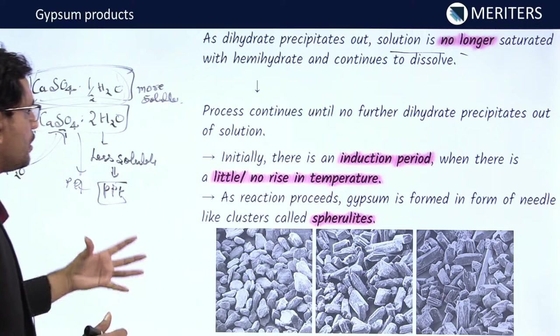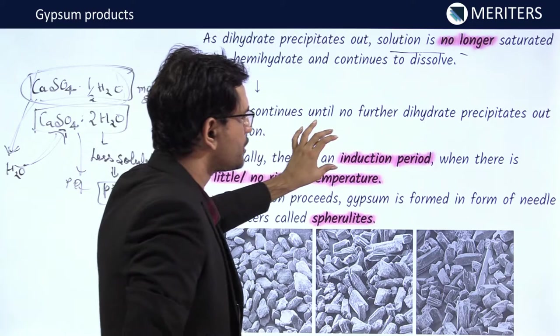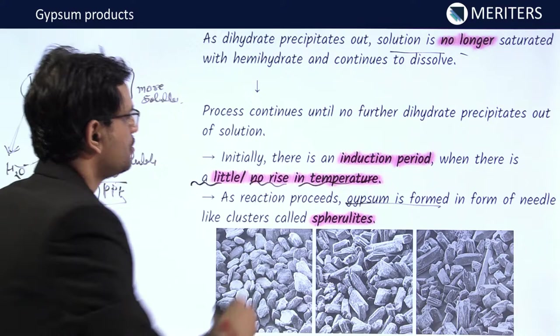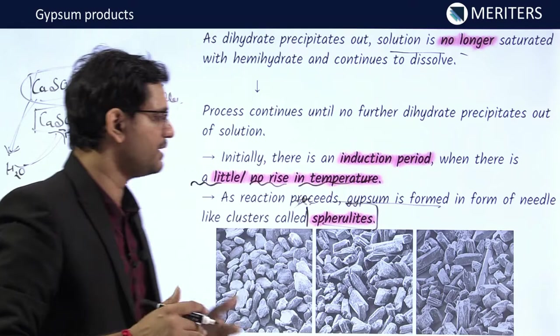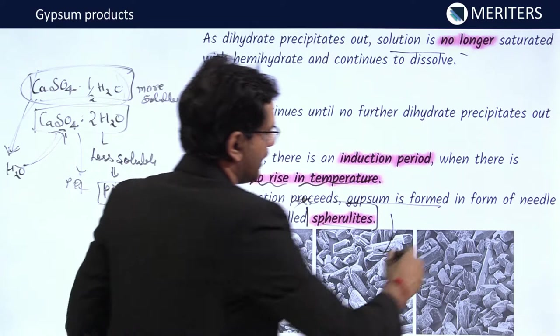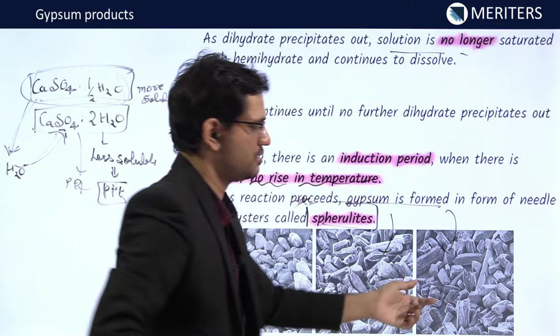Initially there is an induction period with little or no rise in temperature. As the reaction proceeds, gypsum forms as needle-like crystals called spherulites. Crystal appearance varies by type: more irregular in plaster, more regular in dental stone, and cuboidal in die stone.